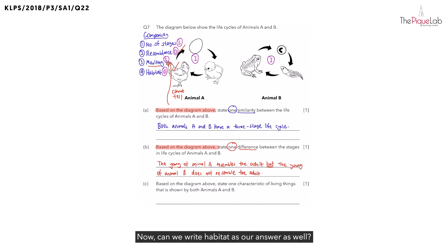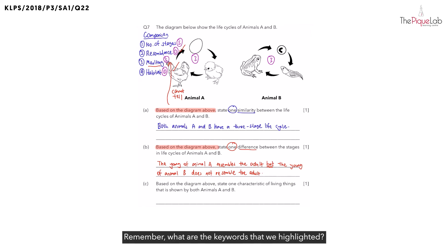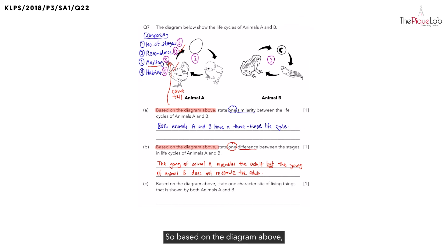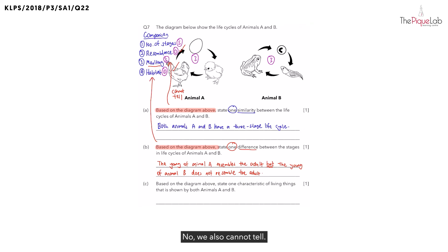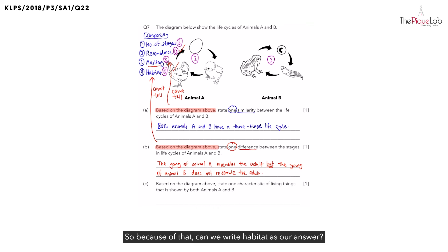Can we write habitat as our answer as well? If you wrote habitat as your answer, you would get this question wrong. Remember, what are the keywords that we highlighted? We said 'based on the diagram above.' Based on the diagram above, can you tell what are the habitats of animal A and B? No, we also cannot tell. So because of that, we cannot write habitat as our answer.